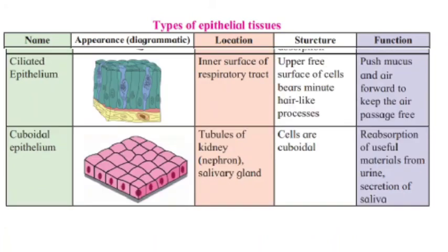Next is ciliated epithelium tissue. Its location is the inner surface of your respiratory tract. Its structure has an upper free surface where the cell bears minute hair-like processes called cilia. The function is to push mucus and air forward to keep the air passage free. The cilia push out whatever disturbance is in your windpipe and respiratory tract, clearing the track continuously.